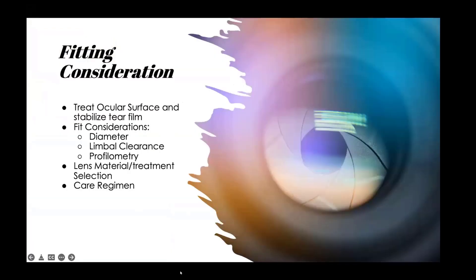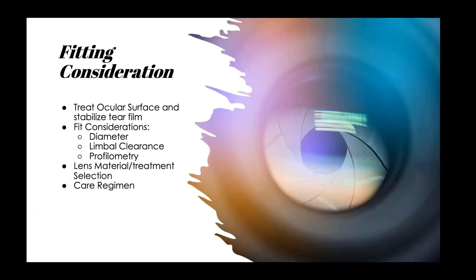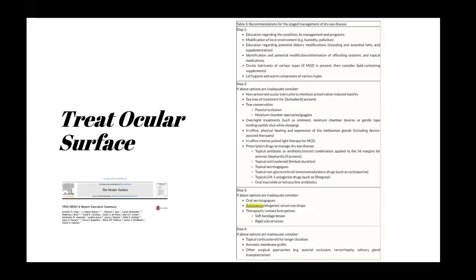Moving to fitting considerations: we are still treating the ocular surface and stabilizing the tear film as a priority. The DEWS report breaks treatment down into steps: initial steps include lid hygiene, warm compresses, and lubrication — particularly treating MGD first — then non-preserved lubrication, moisture chamber goggles, punctal occlusion, and steroids. Scleral lenses don't appear until step three, and it isn't one-size-fits-all. The most important thing is to clearly explain to patients that scleral lenses are not curing the condition in many cases — it's just managing and controlling it, similar to taking medication for diabetes.